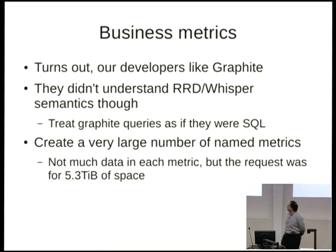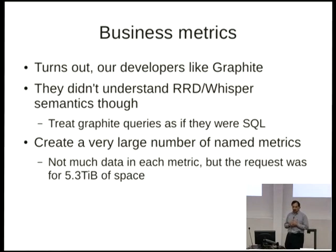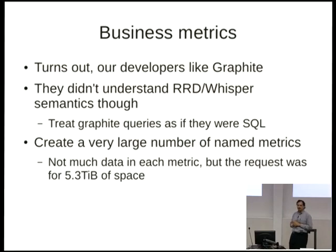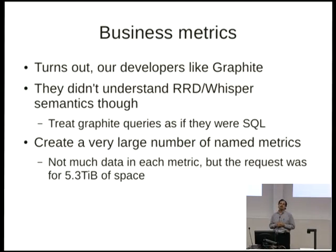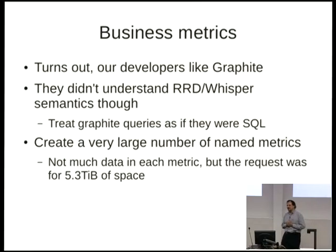We had one developer who decided this was just going to store data like MySQL — one record per row. Maybe about 100 or 200 data points but a lot of named metrics. In the second week of operation, that ballooned to 5.3 terabytes of space, which we didn't have. Every 15 minutes we'd ask: why is this box running out of space again?